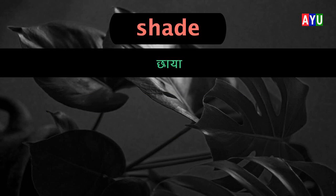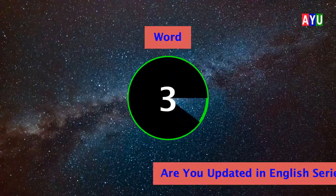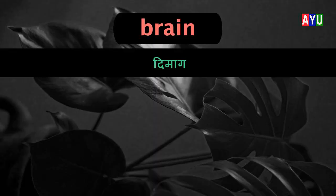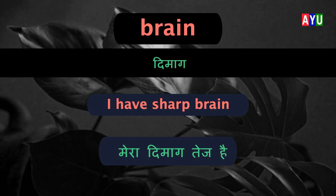Third word: Brain. Brain means Dimaag. Let's see one example — I have a sharp brain. Mera dimaag tej hai.